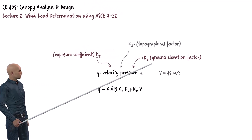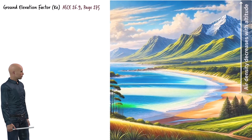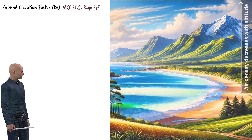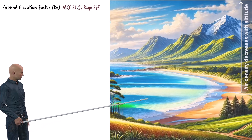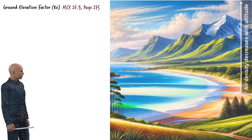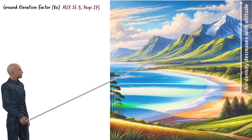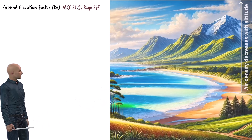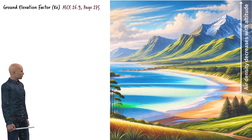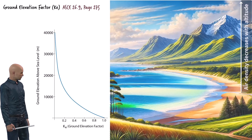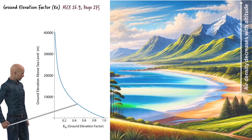Next, let's see how the ground elevation factor is determined. When determining wind loads on structures, the ground elevation factor KE accounts for changes in air density with elevation. According to ASCE 7-22, KE is equal to 1 at sea level, where air density is highest. As elevation increases, air density decreases, leading to a corresponding reduction in wind pressure. Thus, KE is always less than 1 at higher elevations. This ensures that wind load calculations appropriately reflect the reduced wind pressure at elevated sites, allowing engineers to design structures safely and efficiently for their geographic context. We can show the relationship between ground elevation and KE using a graph — it shows how KE approaches 1 at sea level and decreases as elevation increases.